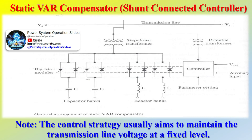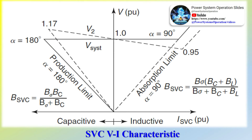A STATCOM has superior performance during low-voltage conditions as the reactive current can be maintained constant. In an SVC, the capacitive reactive current drops linearly with the voltage at the limit of capacitive susceptance. It is even possible to increase the reactive current in a STATCOM under transient conditions if the devices are rated for the transient overload. In an SVC, the maximum reactive current is determined by the rating of the passive components — reactors and capacitors.